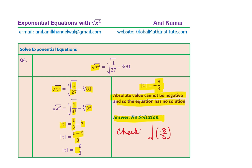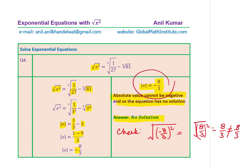Let's check: the square root of negative eight over three, squared, gives the square root of eight over three squared, which equals eight over three. This is not equal to minus eight over three. So even if you try x equals negative eight over three, since the right-hand side in this case is negative eight over three, we will never get negative eight over three from the absolute value. That is what is important.